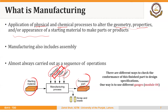The finished part can be checked in different ways. There are different ways to check the conformance of the finished part to design specifications, and one of the ways is to use different types of gauges. We will discuss the design of different types of inspection tooling, including different types of gauges, in module four after midterm.